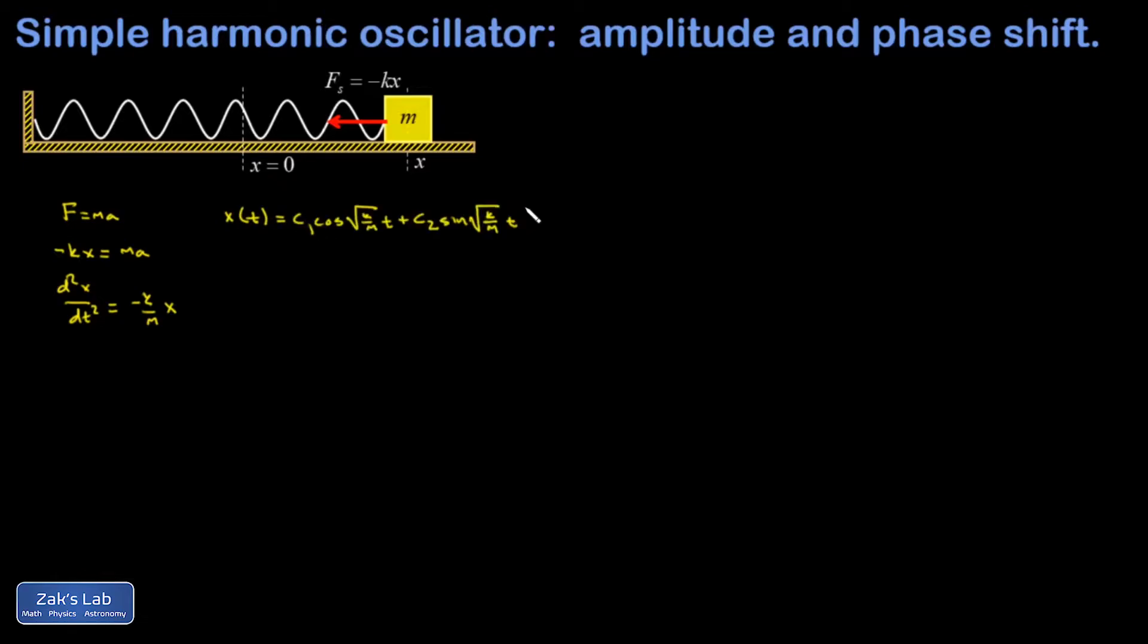That general solution is the sum of two periodic functions that have the same period. That period happens to be 2π divided by root k over m.